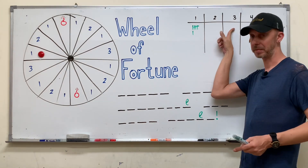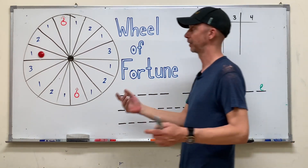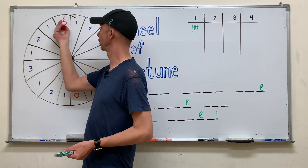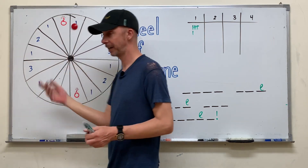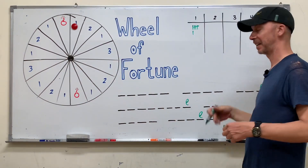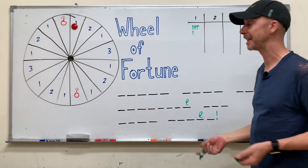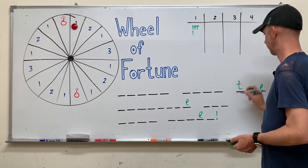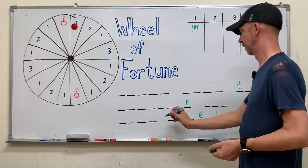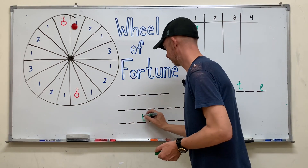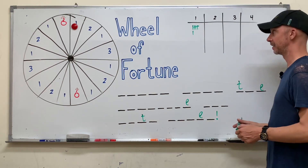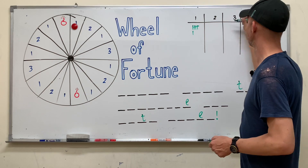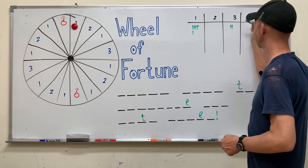It becomes team three's turn. They roll the dice, maybe they get a four — one, two, three, four. They guess the letter T. There are the T's — they get two times one, so they get two points.